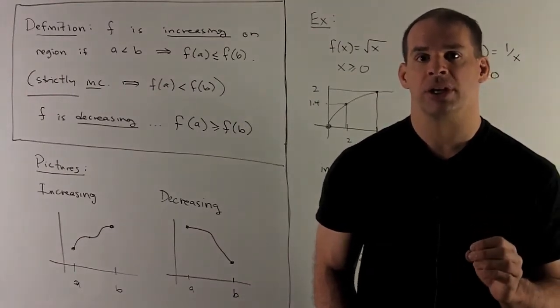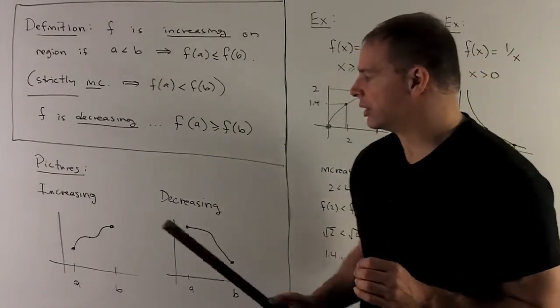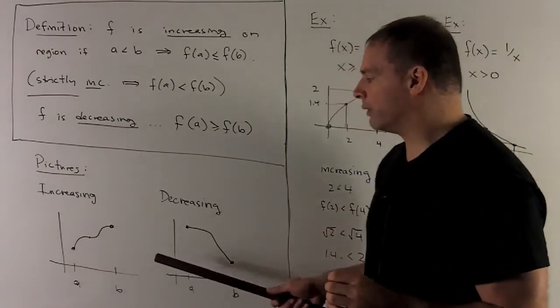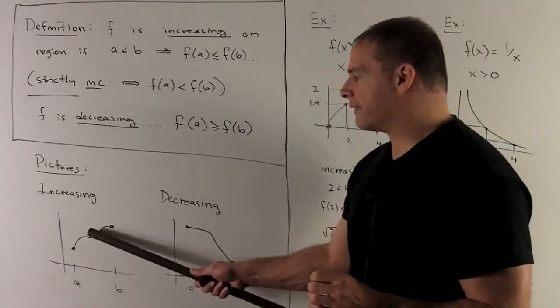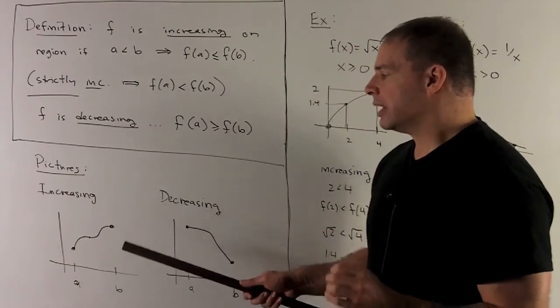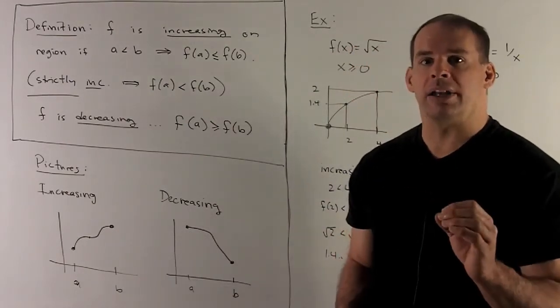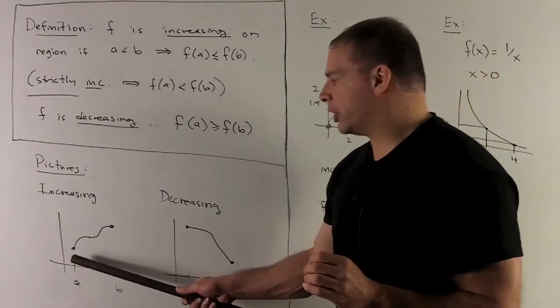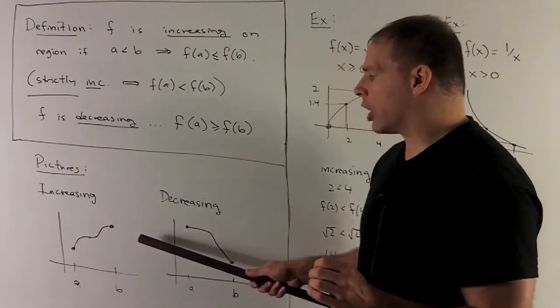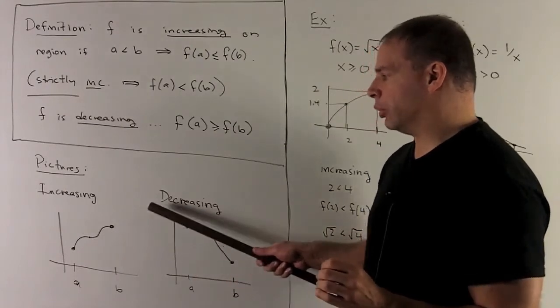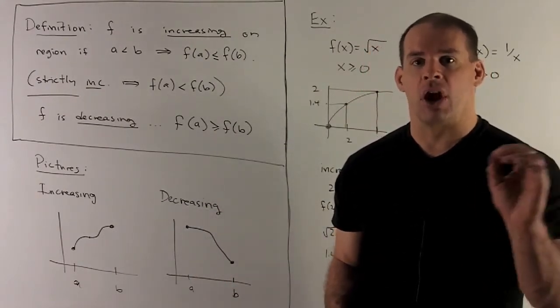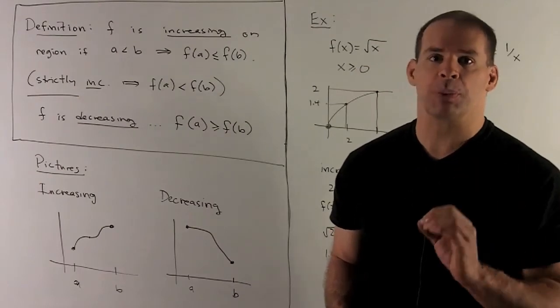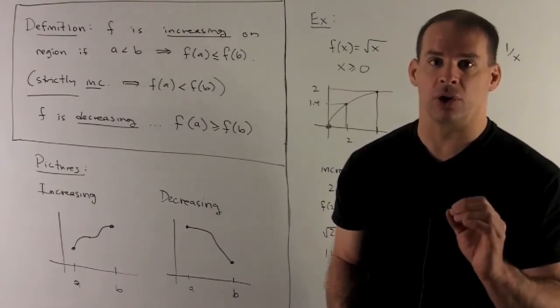If we look at pictures, increasing and decreasing look like this. So for increasing, as I move from left to right, our graph is going to be traveling up. Since we have an equality between f of a and f of b potentially, it could move up, hang out on a horizontal line for a while, and keep moving up. Actually, the whole thing could just live on a horizontal line. That's just part of the definition of increasing.